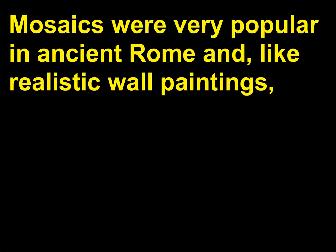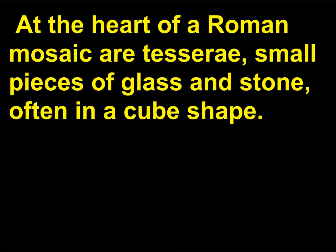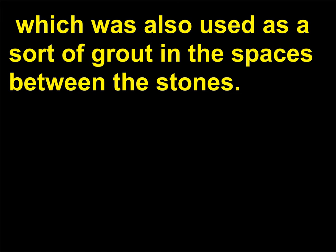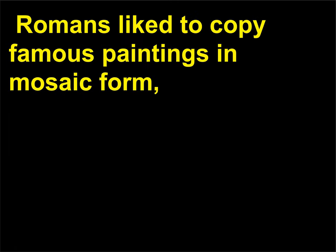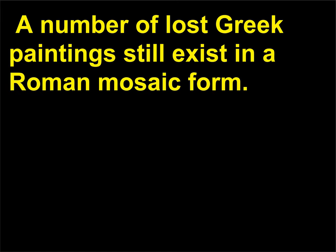Mosaics were very popular in ancient Rome and, like realistic wall paintings, were used extensively to decorate the floors of private homes and villas of the wealthy. At the heart of a Roman mosaic are tesserae — small pieces of glass and stone, often in a cube shape — pressed into cement, which was also used as a sort of grout in the spaces between the stones. Mosaic panels, called emblemata, were usually built off-site by the mosaic artist and then installed into a floor. Romans liked to copy famous paintings in mosaic form, which required very tiny tesserae to achieve the detail of a painting. A number of lost Greek paintings still exist in Roman mosaic form.